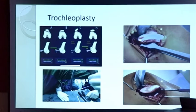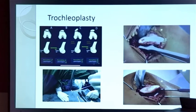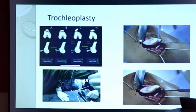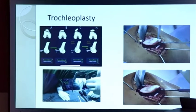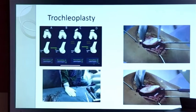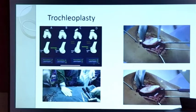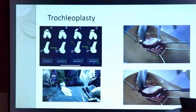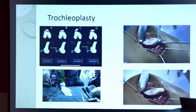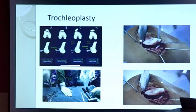For trochleoplasty, I use a special jig provided by Arthrex which has a 3 mm and a 5 mm drill. What you are doing in trochleoplasty is lifting the cartilage: you go below the cartilage, take a flap of cartilage along with bone, keep drilling the whole cartilage, make a thin flap, then compress and fix it with an anchor. Trochleoplasty should be done whenever there is trochlear dysplasia, particularly type B and type D.